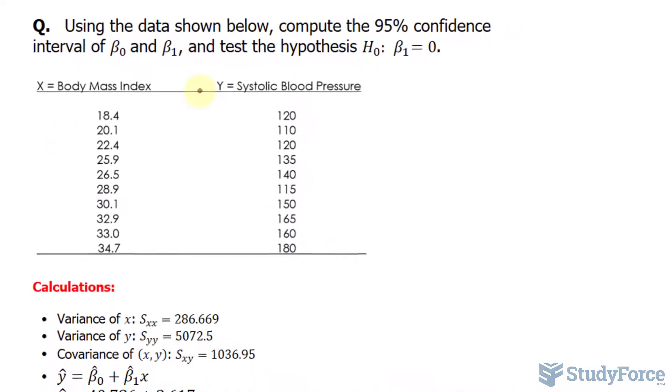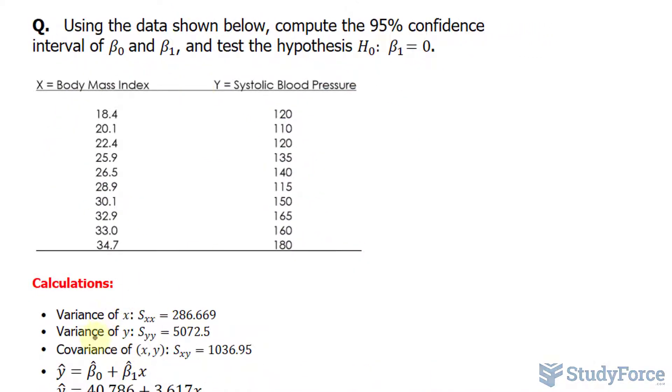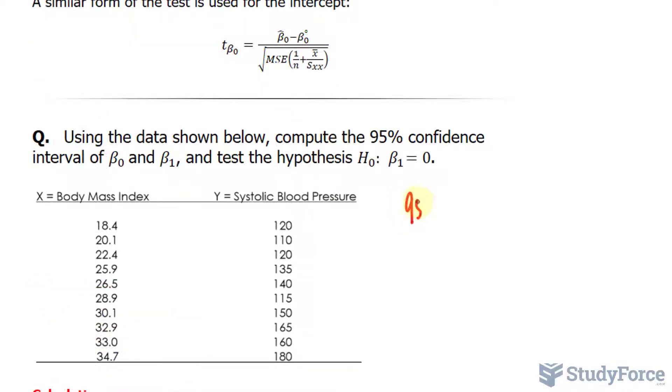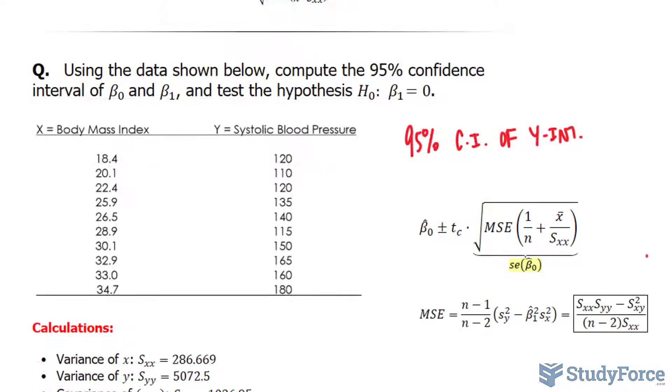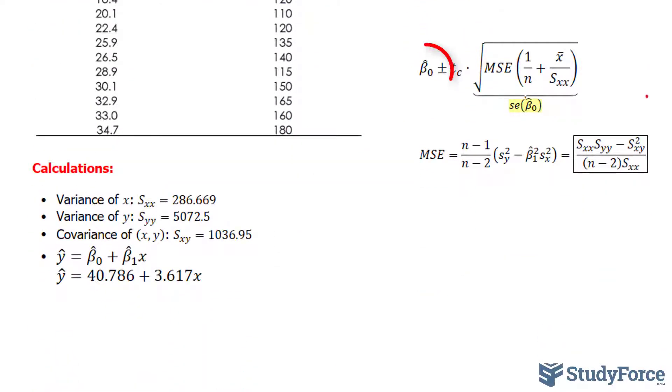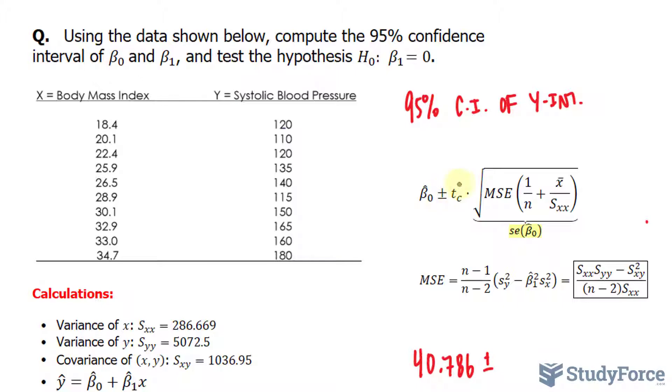Now using the data in this question and some of the calculations that we did in prior videos, let's begin by calculating the 95% confidence interval of the y-intercept. The formula we will need is shown right here and we calculated the y-intercept to be 40.786. 40.786 plus minus, now we have to find the t-critical value where your alpha is 0.05 and the degrees of freedom are n minus 2. There are 10 observations here so 10 minus 2 is 8.